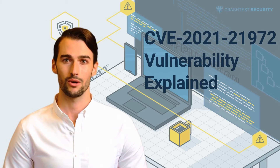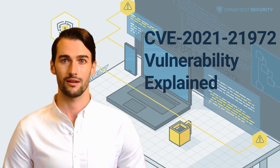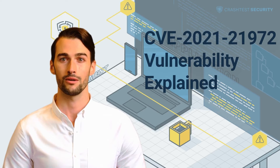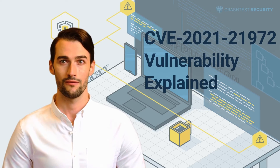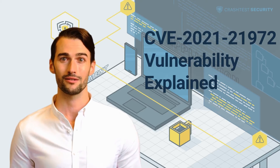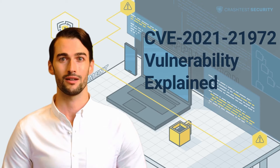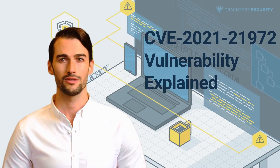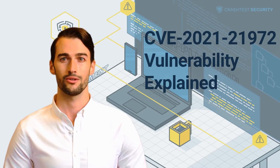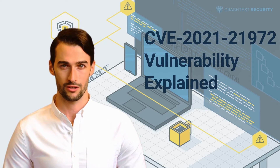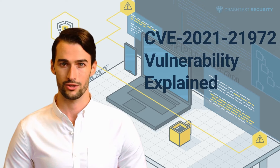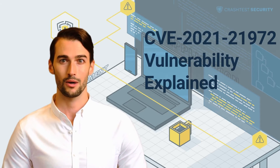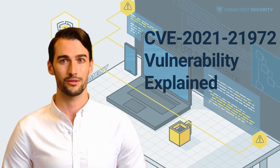The CVE-2021-21972 vCenter Server vulnerability is a remote execution flaw affecting the vCenter Server plugin in the HTML5 vSphere client. In applications that run on such vulnerable systems, a threat actor can issue arbitrary commands through HTTP port 443 with unrestricted privileges.